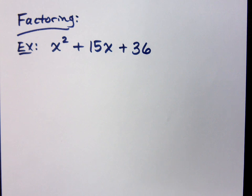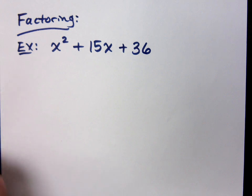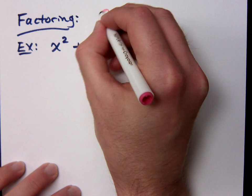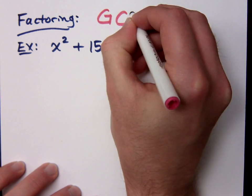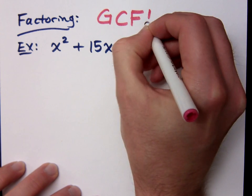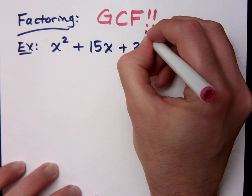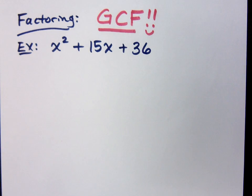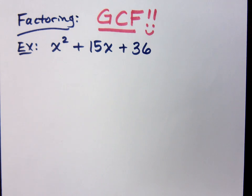I've got to factor this guy. This is your standard trinomial. Love trinomials. Before we even get here, what's the first thing you always do when you're factoring? Always look for the greatest common factor. Always. Because if you don't, none of the tricks or techniques that I taught you, none of that will apply unless you look for the GCF.